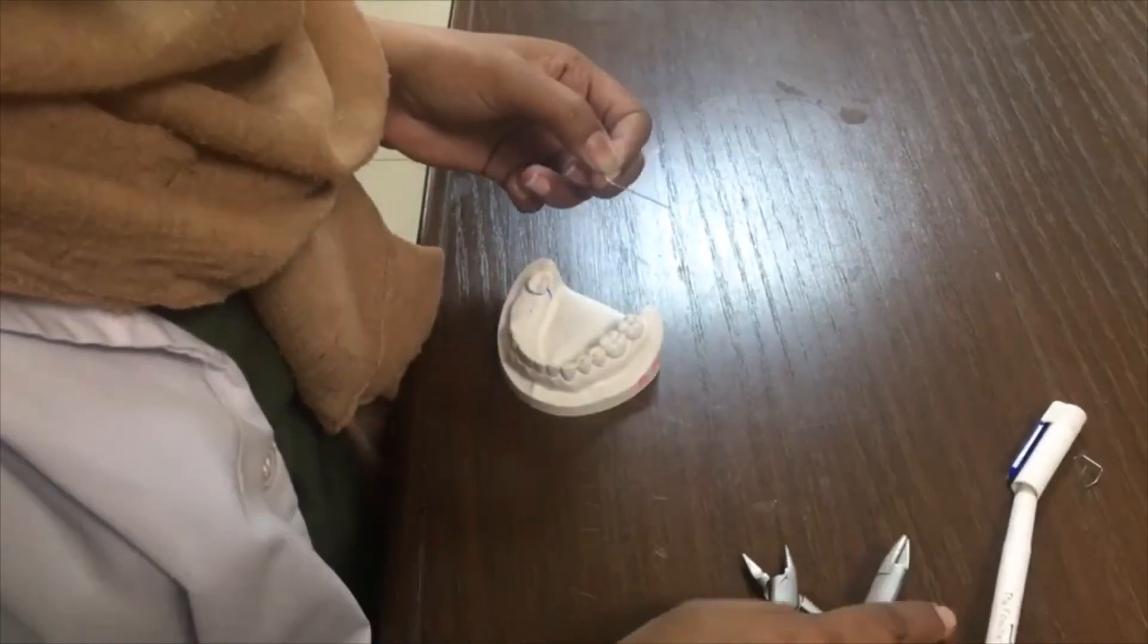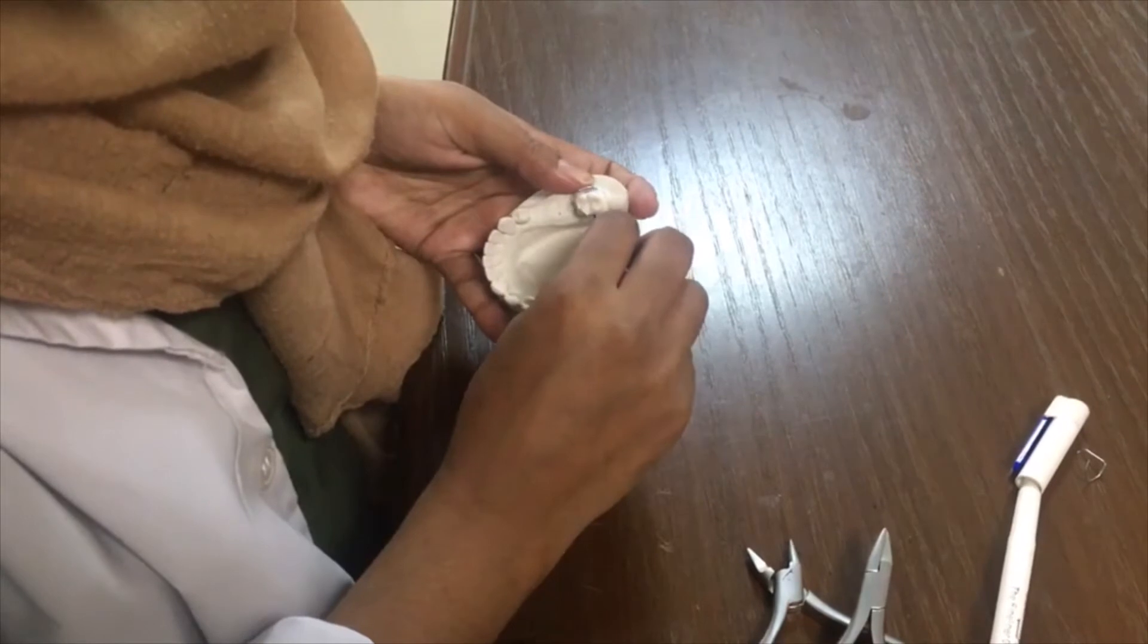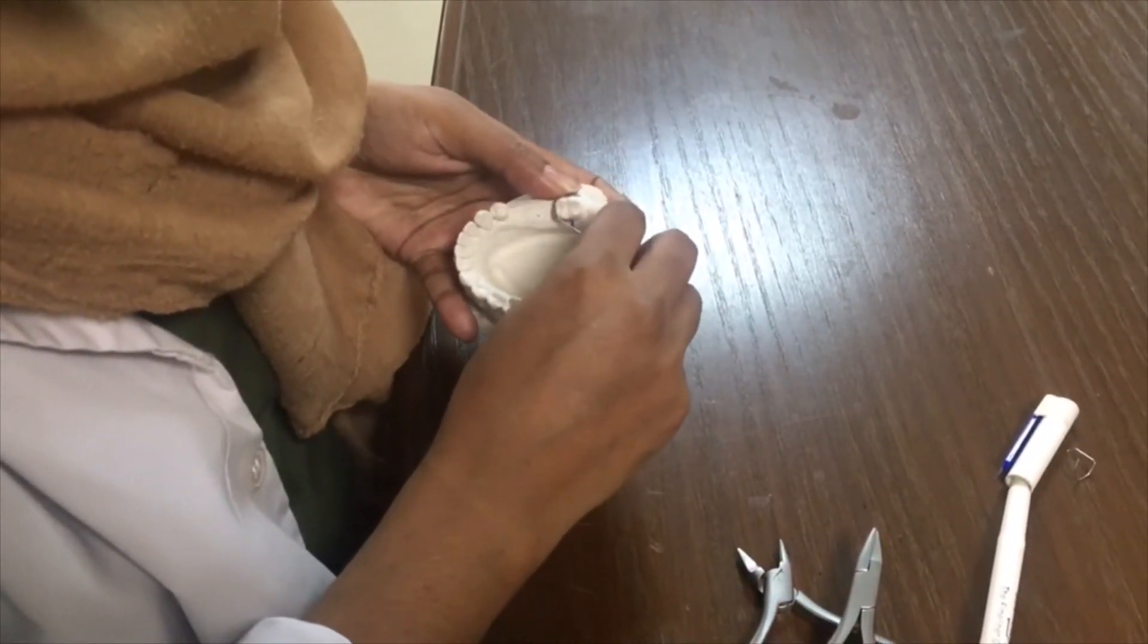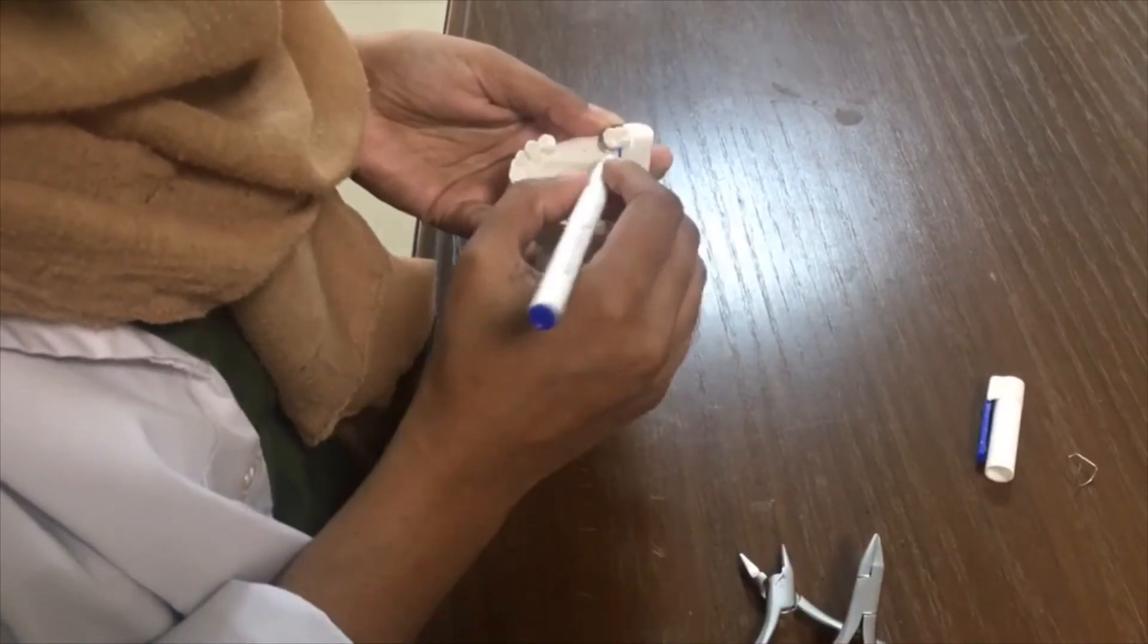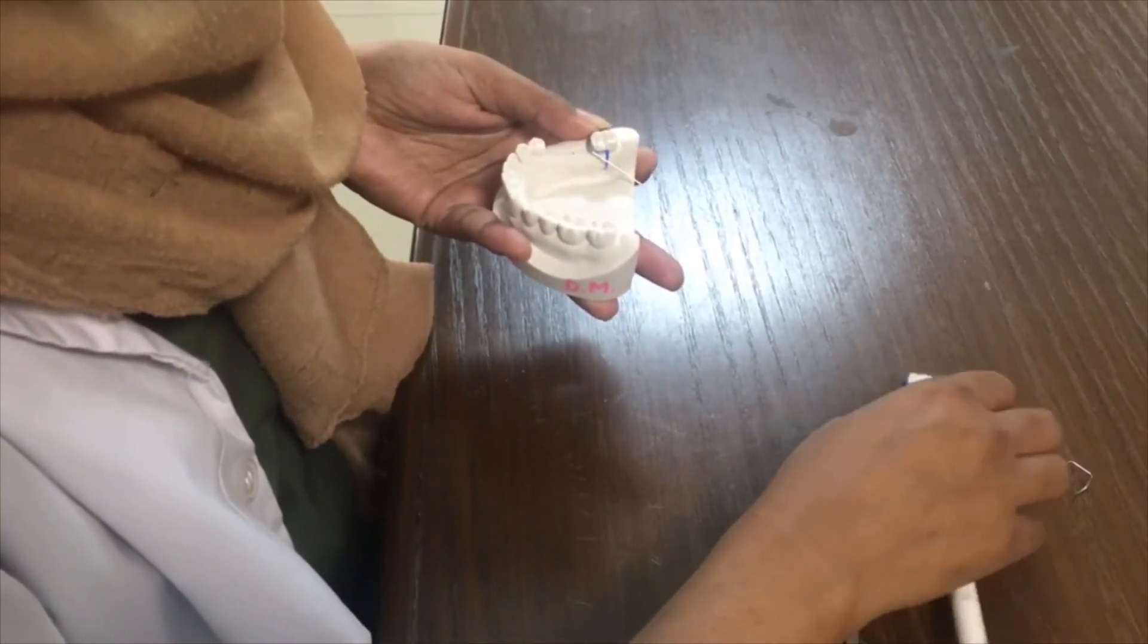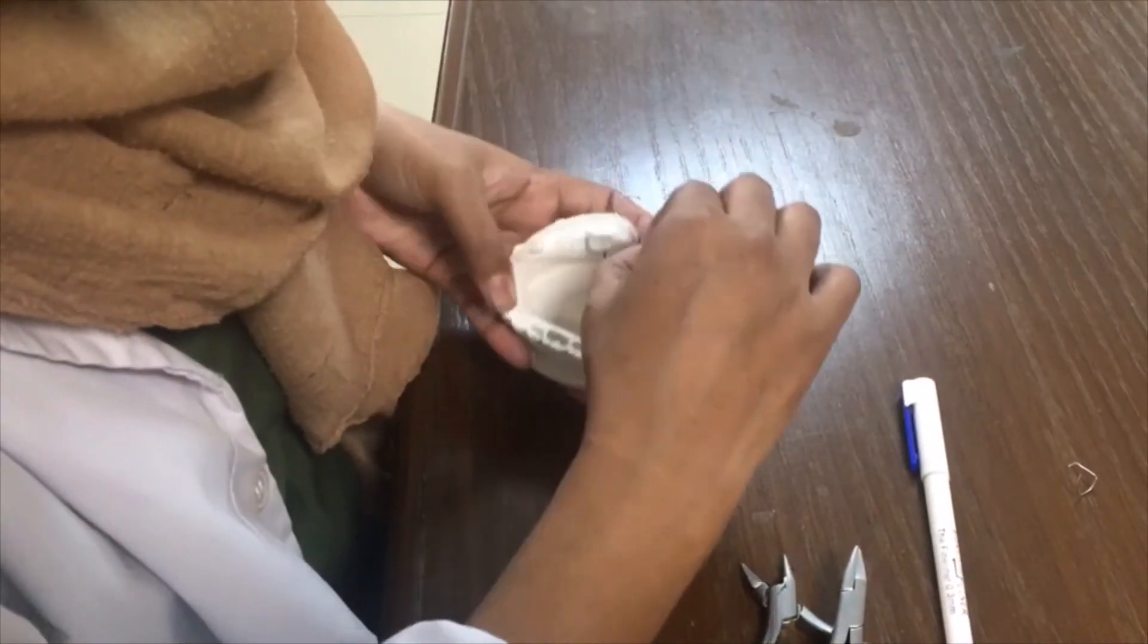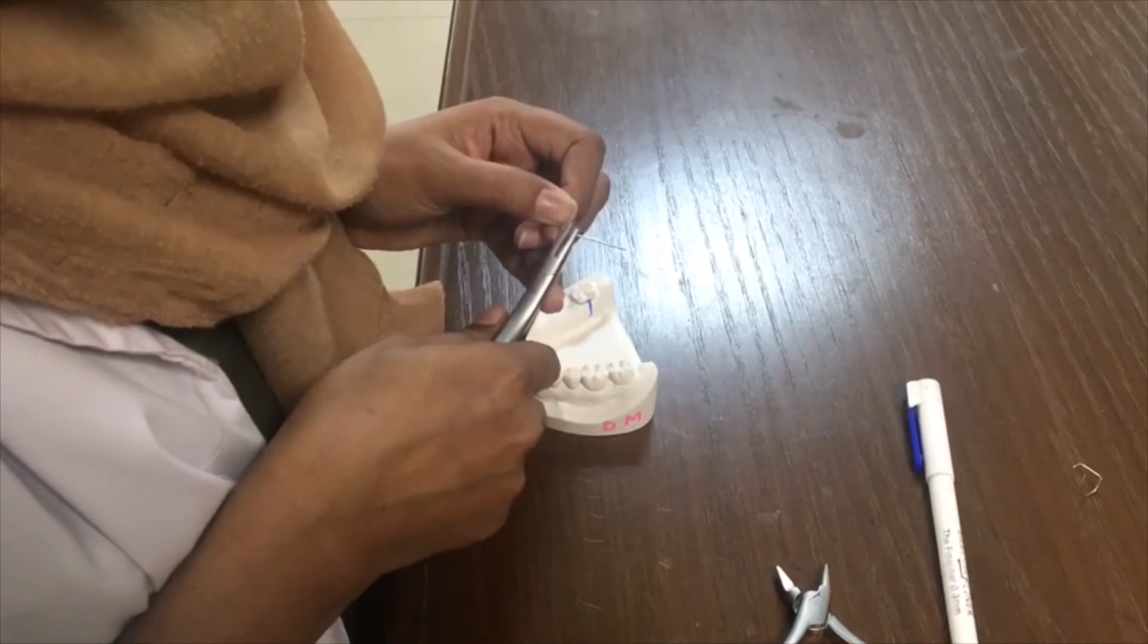The only difference is here that you are now adapting your wire on the surface of the tooth instead of on the template. You have to follow the contours of the tooth and keep a marker handy so that you can mark wherever you have to turn the wire and then turn the wire according to the mark that you have made.